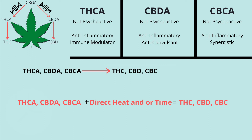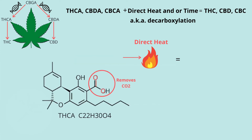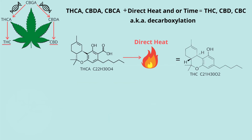It can happen with direct heat and/or time. This process is called decarboxylation, which really is just removing carbon dioxide. You can see THCA here, and in the red circle I have outlined two oxygen atoms and one carbon. This CO2 is what makes THCA an acid, so when we remove it with decarbing, it becomes THC.